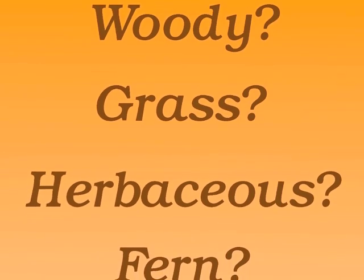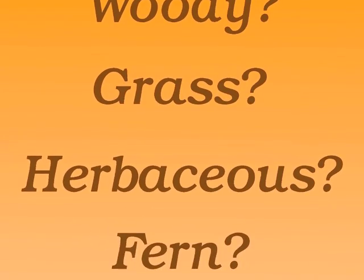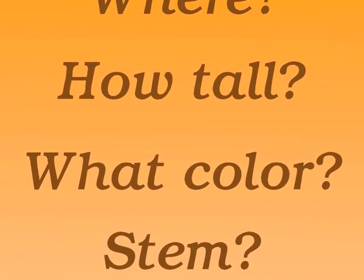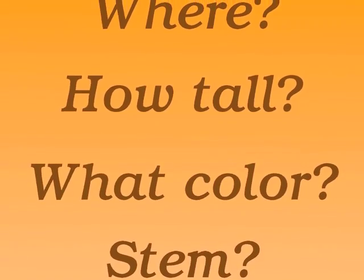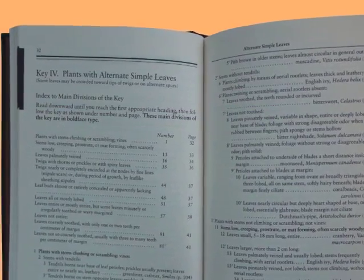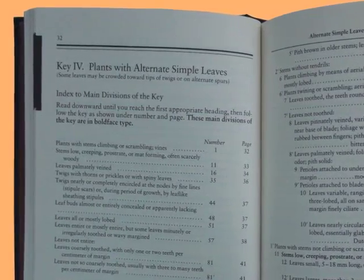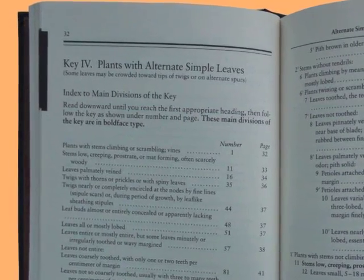Asking questions and determining the answers guides us toward a category or type of plant. Further questions help to focus on the details. Field guides frequently use a question and answer format to narrow down the range of possibilities for identifying a species of plant. So what questions would be useful?